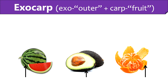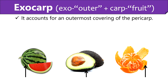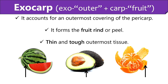Let us discuss each layer of the pericarp in detail. Starting with exocarp, it is the outermost layer of the pericarp — exocarp or epicarp is the fruit skin or fruit peel. Exocarp is generally a thin and tough outermost tissue. In this diagram, the arrows illustrate the exocarp layer. The layer with green patches forms the outer layer of watermelon. The dry and black layer of avocado also indicates the exocarp layer. The porous outer skin of orange also indicates the exocarp layer.